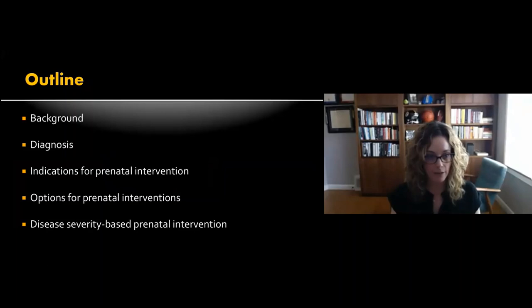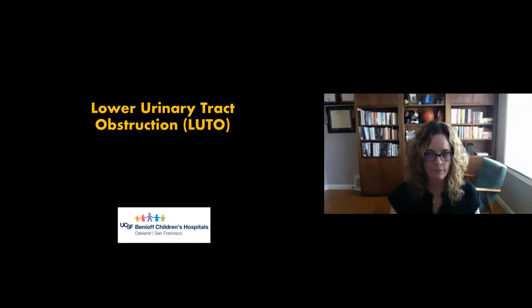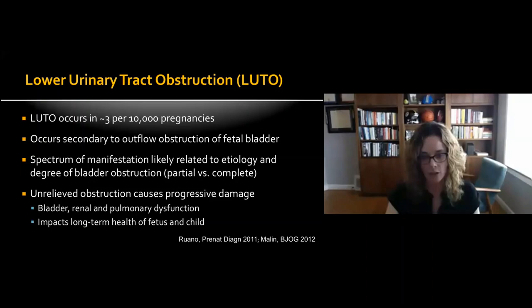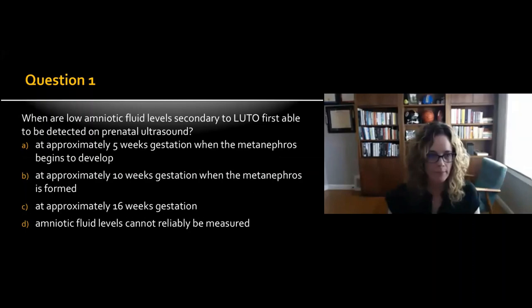Today we're going to talk about LUTO. We'll go through some background, the diagnosis, indications for prenatal intervention, options for prenatal interventions, and then disease severity-based prenatal intervention. First of all, LUTO is rare — it occurs in about three per ten thousand pregnancies. It can be partial to complete obstruction and we know that unrelieved obstruction causes progressive damage including bladder, renal, and pulmonary dysfunction.